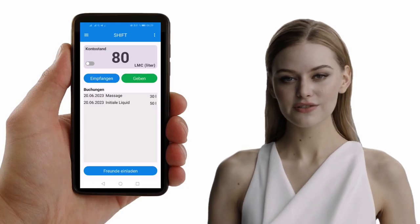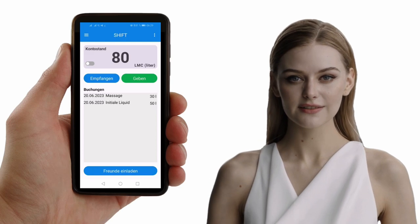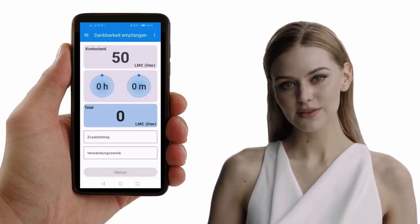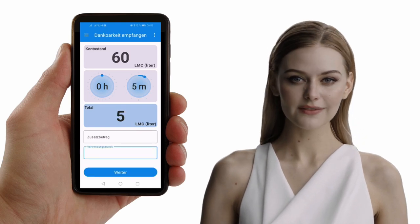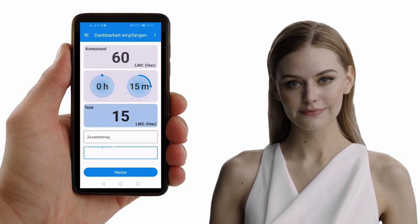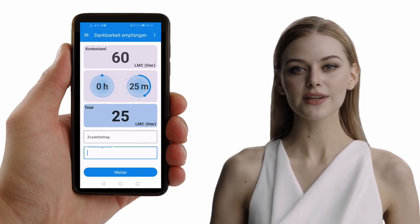Receiving a payment in Shift is as simple as turning the hands of a clock. Press the receive button, then adjust the clock handles to your desired amount. The total LMC will be calculated for you. The billing is always done in hours and minutes.